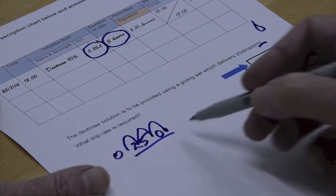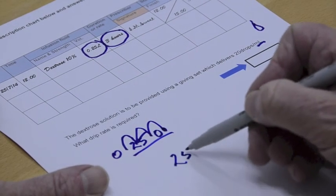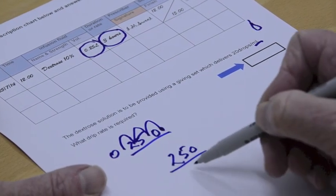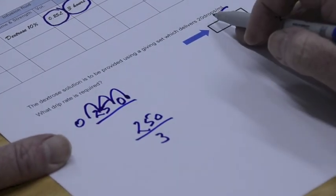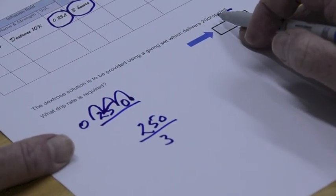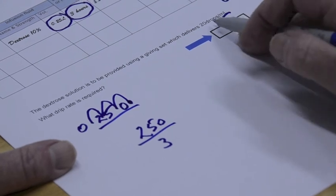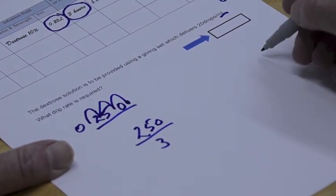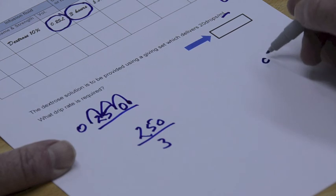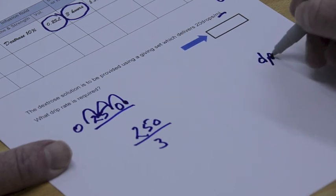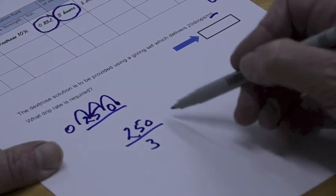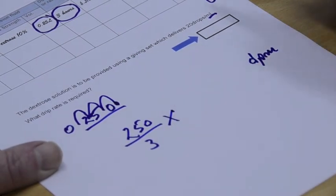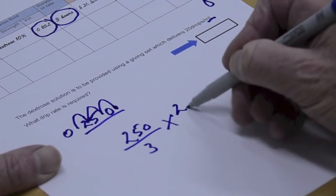250 mils to be given over three hours. Now, we're using a giving set. And that will be dripping at this sort of rate. And our answer will be in numbers of drops per minute, or DPM, drops per minute. So included in this calculation has to be the rate at which it's delivering, which is 20.